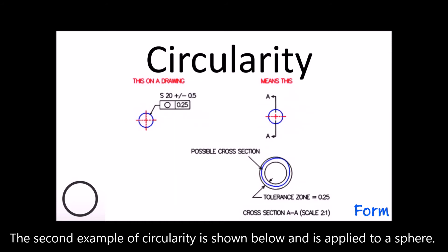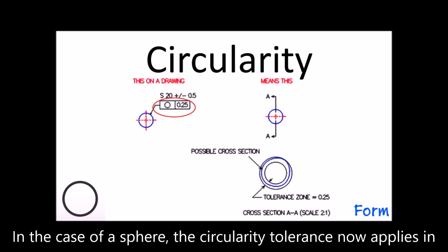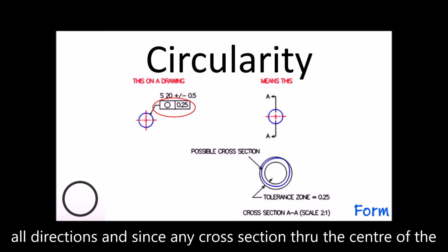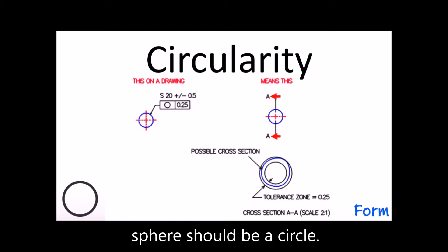The second example of circularity is shown below and it's applied to a sphere. In the case of a sphere, the circularity tolerance now applies in all directions and since any cross-section through the center of the sphere should be a circle...